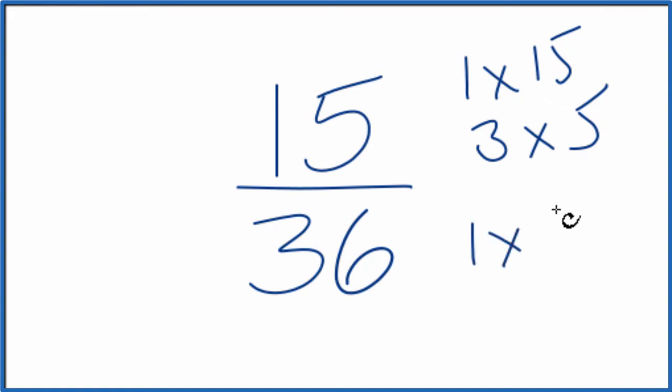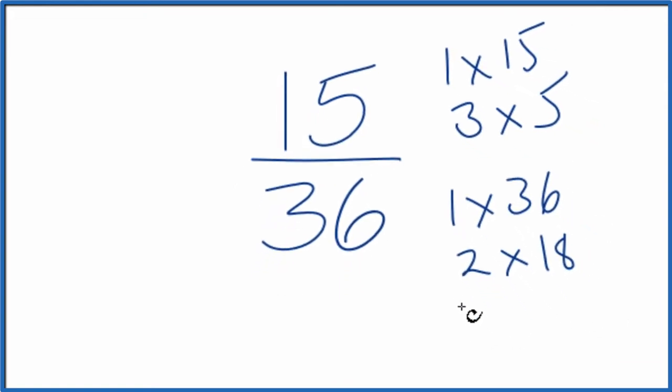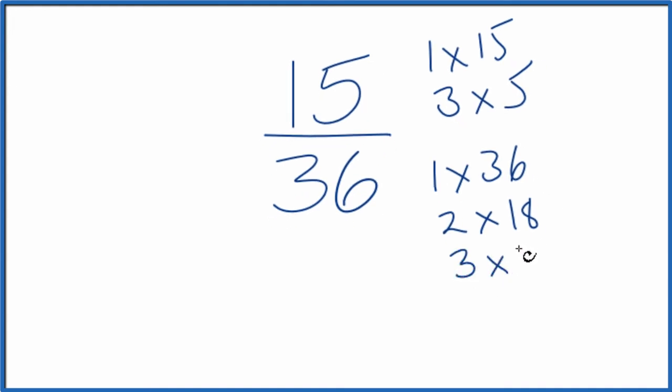For 36, 1 times 36, 2 times 18, 3 times 12, 4 times 9, 6 times 6, and I think that's it.